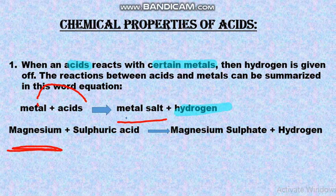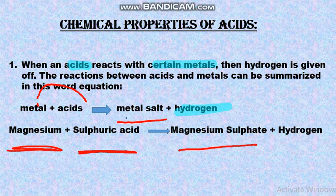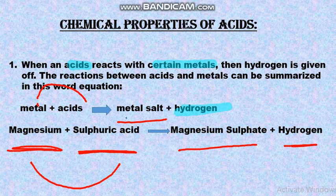For example, magnesium is the metal and sulfuric acid is a strong acid. The metal salt produced is magnesium sulfate along with hydrogen. So when magnesium reacts with sulfuric acid, magnesium sulfate and hydrogen are given off.